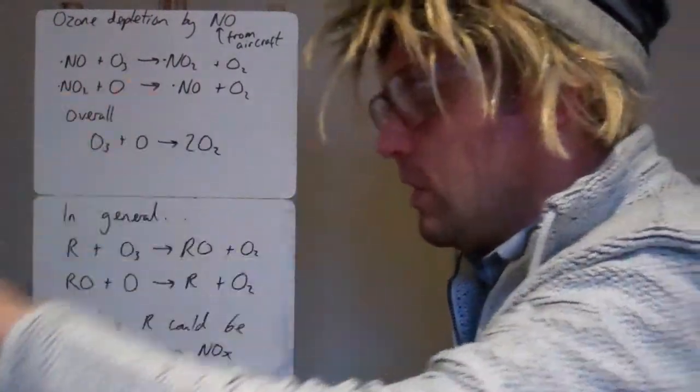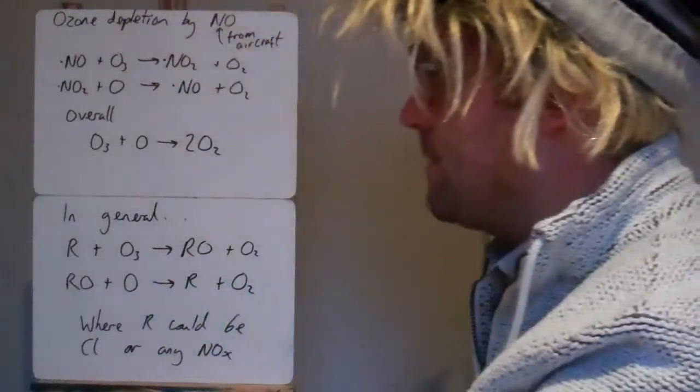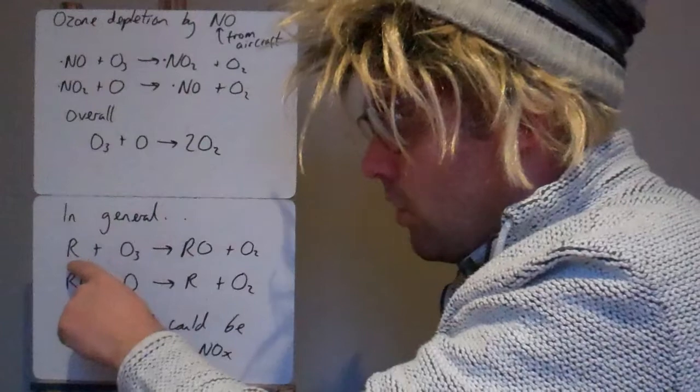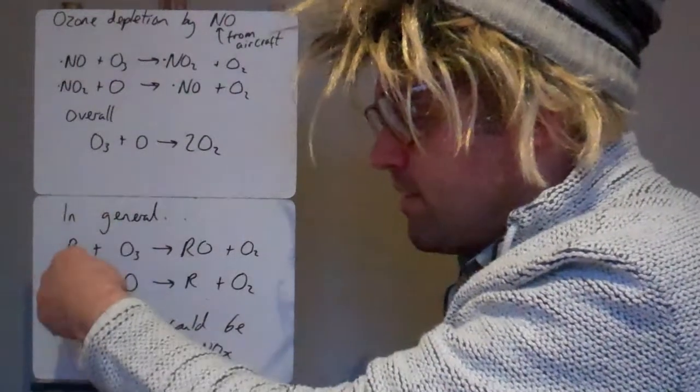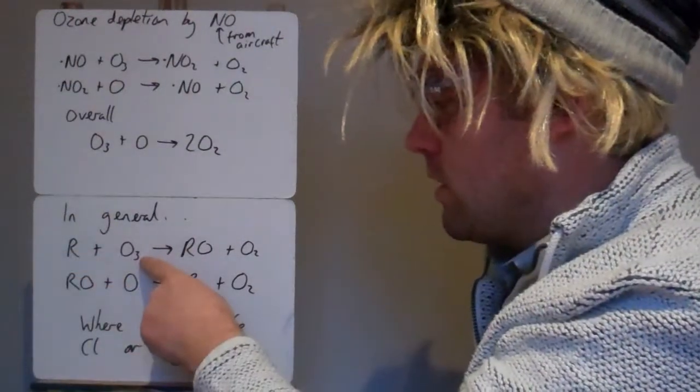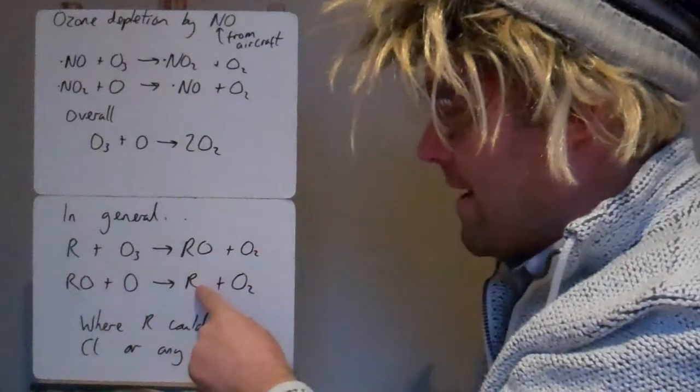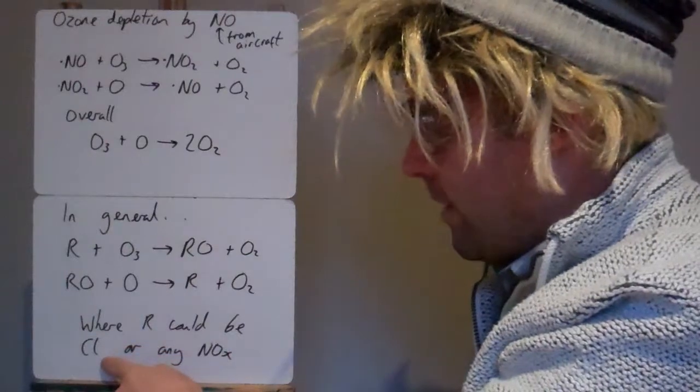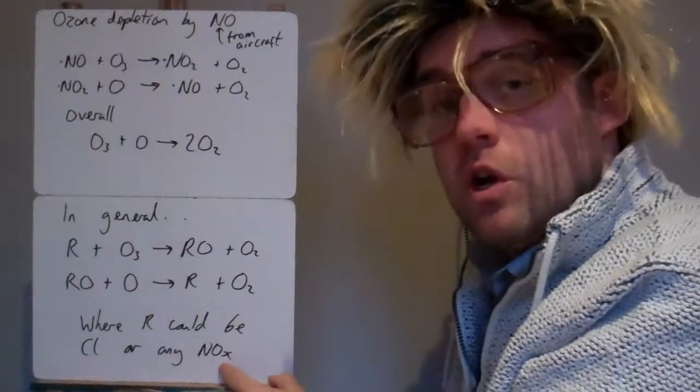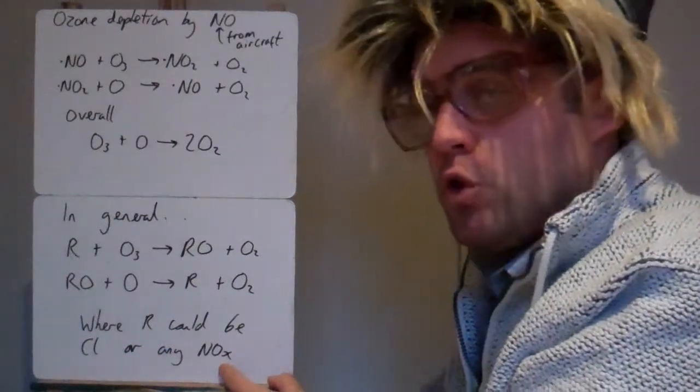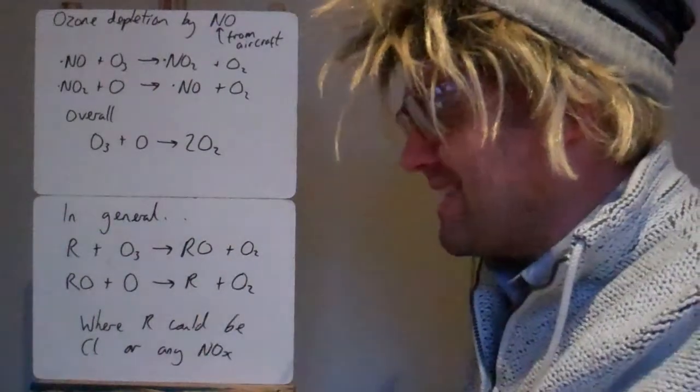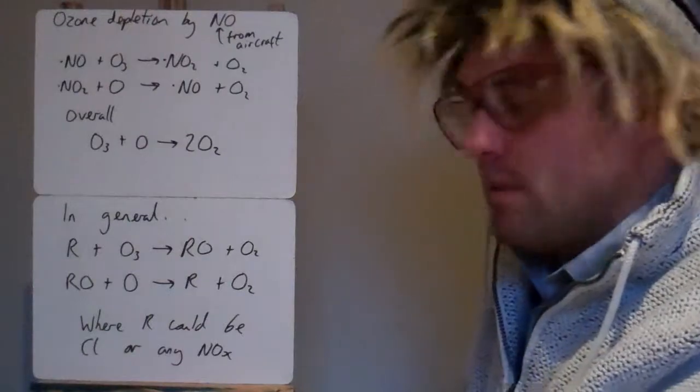So ozone depletion is not limited to just chlorine free radicals and nitrogen oxides. Lots of free radicals, which is represented as R here, can react with ozone. It's the same pattern each time: the free radical is regenerated. So R could be a chlorine free radical, or it could be any oxide of nitrogen. It's not just NO, it could be NO2, NO3, any of those go on and react in the same way. And that leads to depletion of ozone.